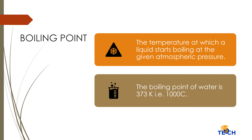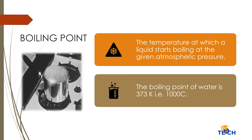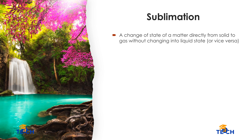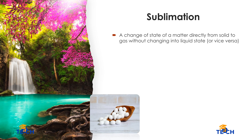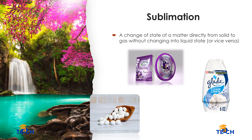Boiling point: the temperature at which a liquid starts boiling at the given atmospheric pressure. The boiling point of water is 373 K, that is 100°C. A change of state of matter directly from solid to gas without changing into liquid state, or vice versa, is called sublimation. Examples are moth balls, perfume tubs, and solid air freshener.